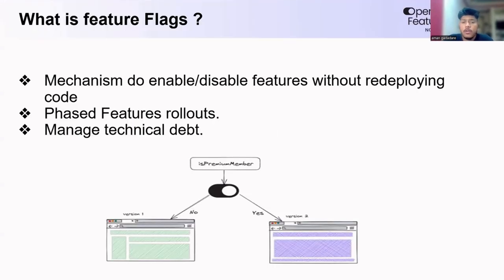Feature Flags is nothing but a configuration mechanism that allows developers to enable or disable specific features at runtime without code deployment. Think of it as a control panel where you can decide who sees the features and when, so you can test new functionalities safely before everyone uses it.